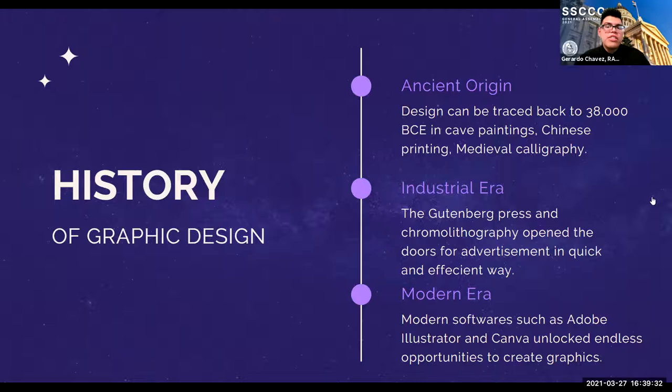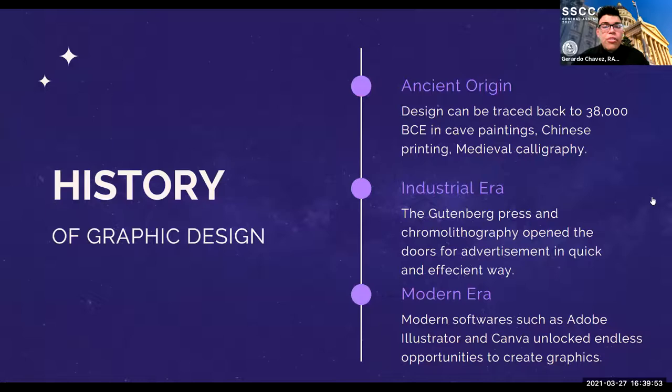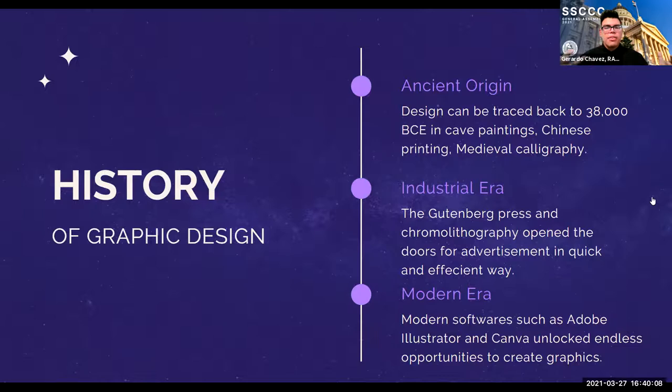We saw it through the government press. If you took a history class, whether in college or high school, we talked about the industrial era and how machines printed thousands of newspapers per minute. But we also have chromolithography, and it really opened the doors for fast advertisement. We no longer have a very inaccurate depiction of the anatomy of a human, but now we have a more sophisticated way to convey elements and design.